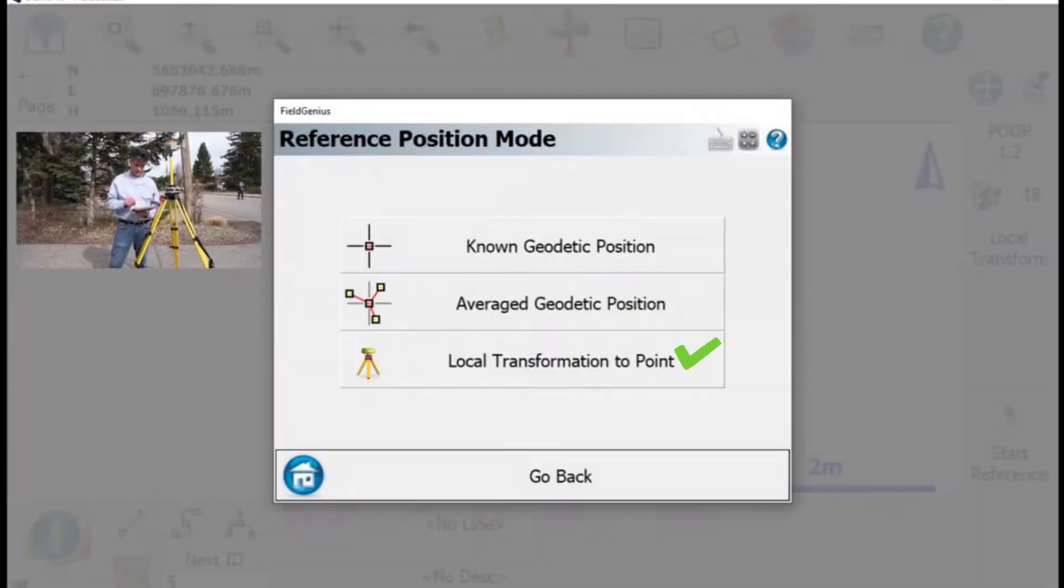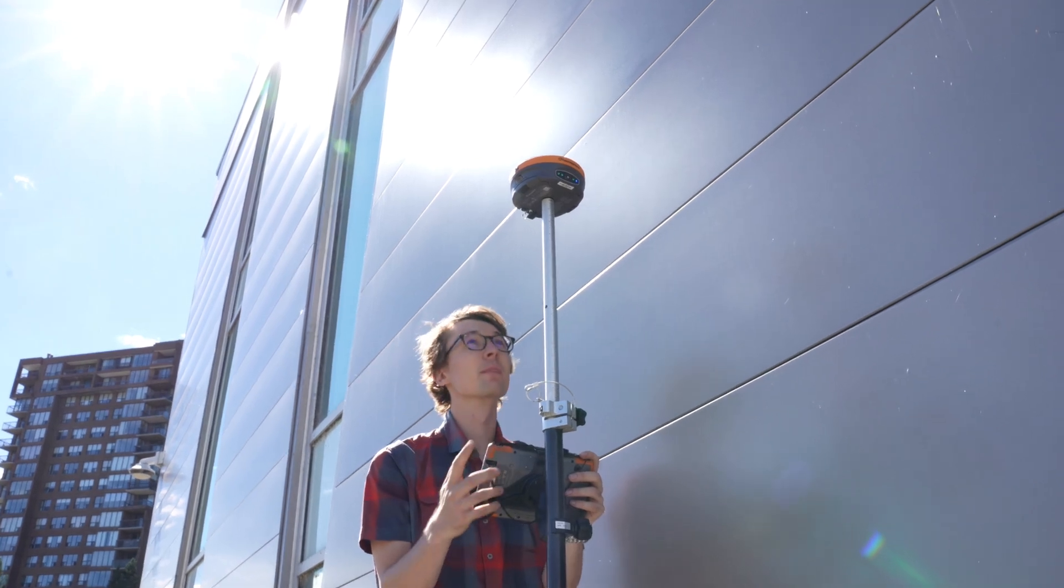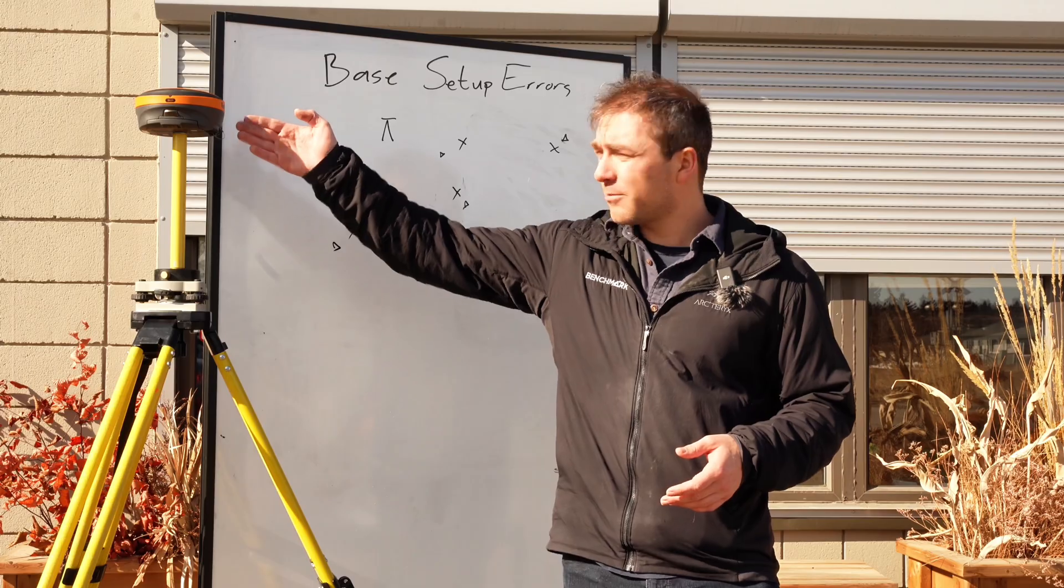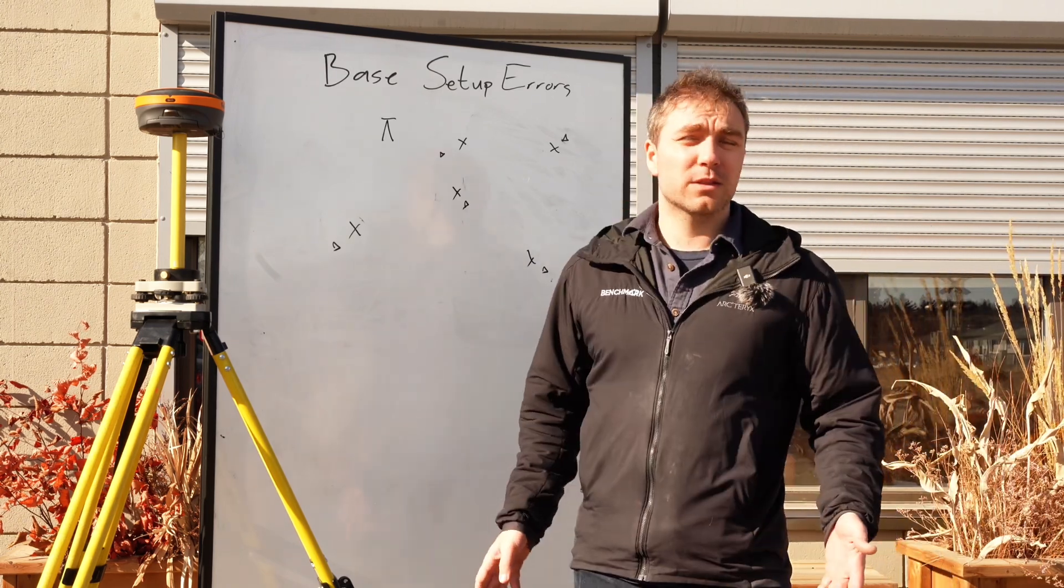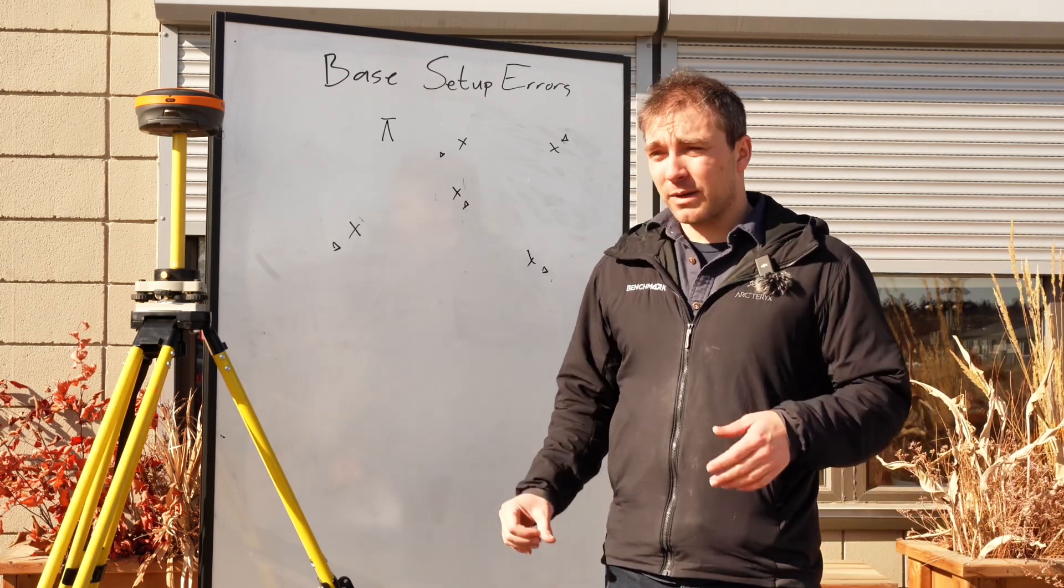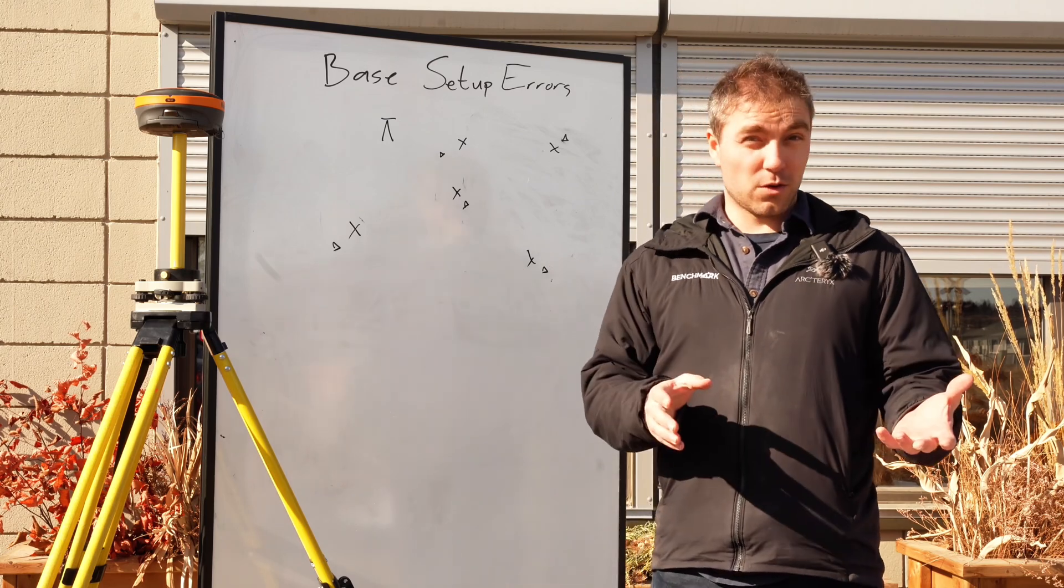Rather than doing two average geodetic setups, they've done two local transformation point setups. What that means is you've taken a point on day one, you've said this lat long of my base, this is the northing and easting for it, let's go survey.